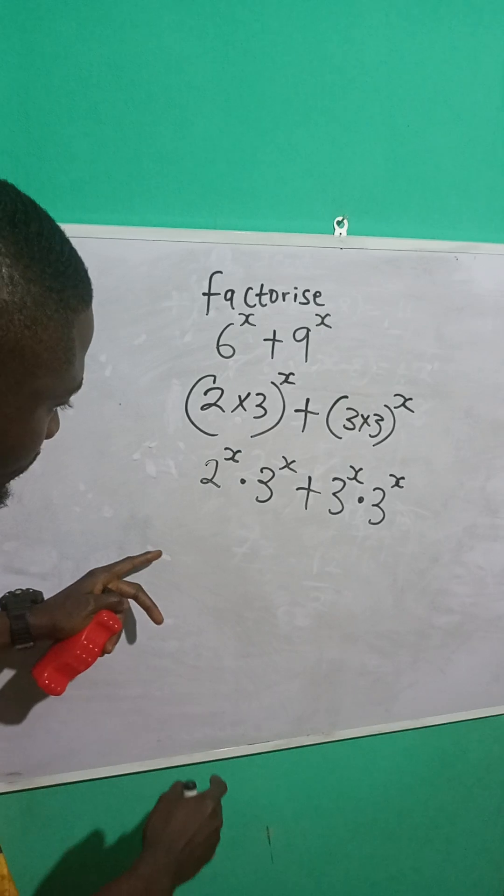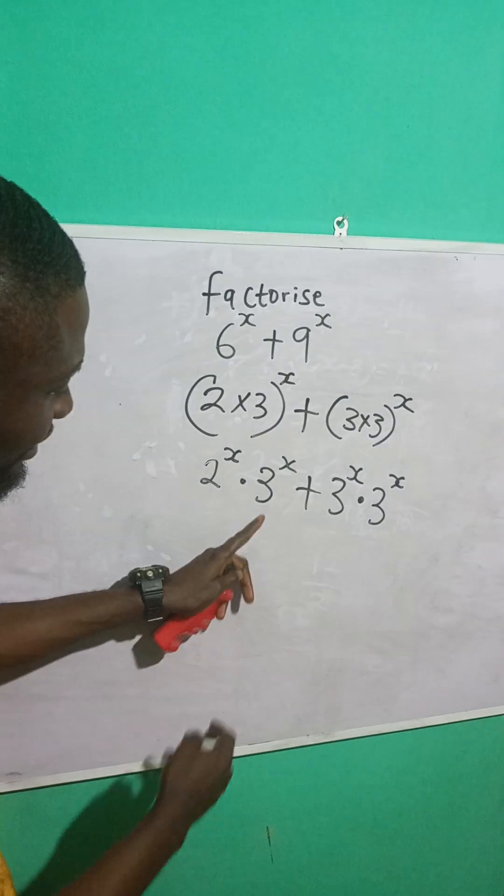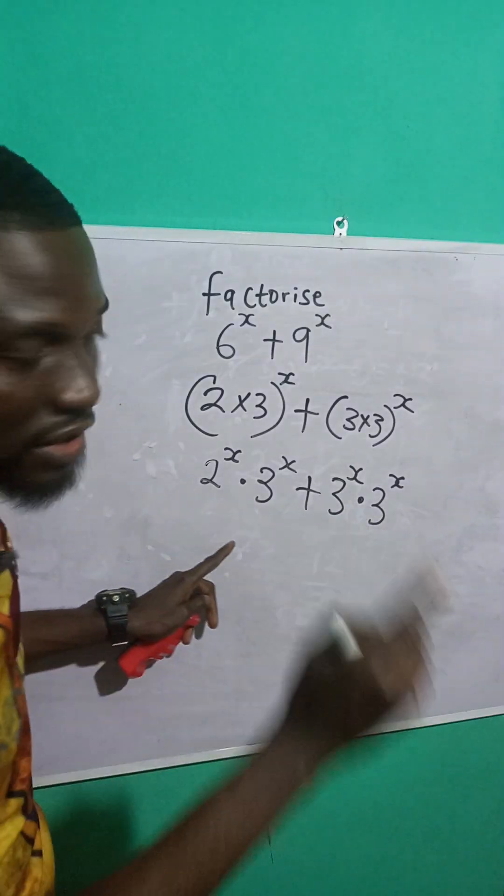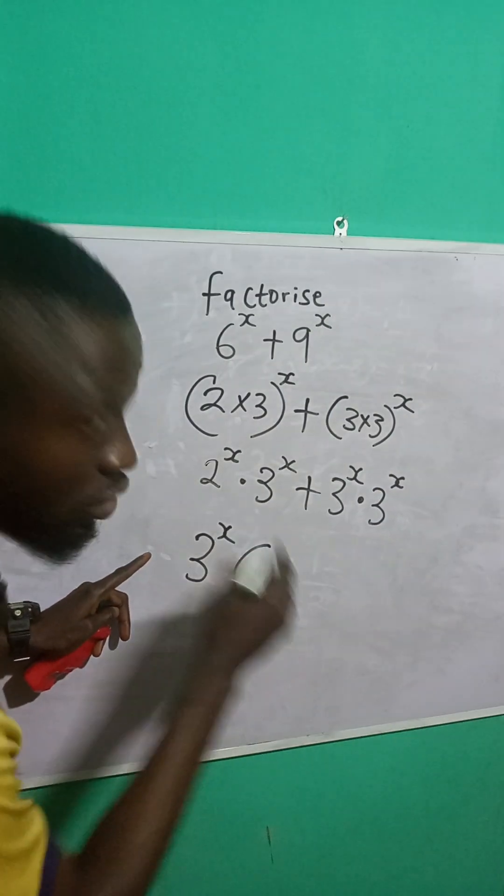Now, look at this. What is common between these two terms? You can see that 3 raised to the power of x is common because we have it here and we also have it here. So, we will just factor it out. So, you want 3 raised to the power of x. We will open your bracket.